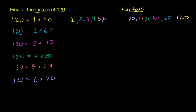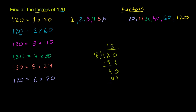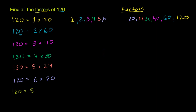Let's think about whether 8 works. Let's take 8 into 120. 8 goes into 12 one time; 1 times 8 is 8; subtract, 12 minus 8 is 4; bring down the 0; 8 goes into 40 five times; 5 times 8 is 40; left with no remainder. So 120 is equal to 8 times 15. Let's add that to our factor list — so we now have 8 and 15.